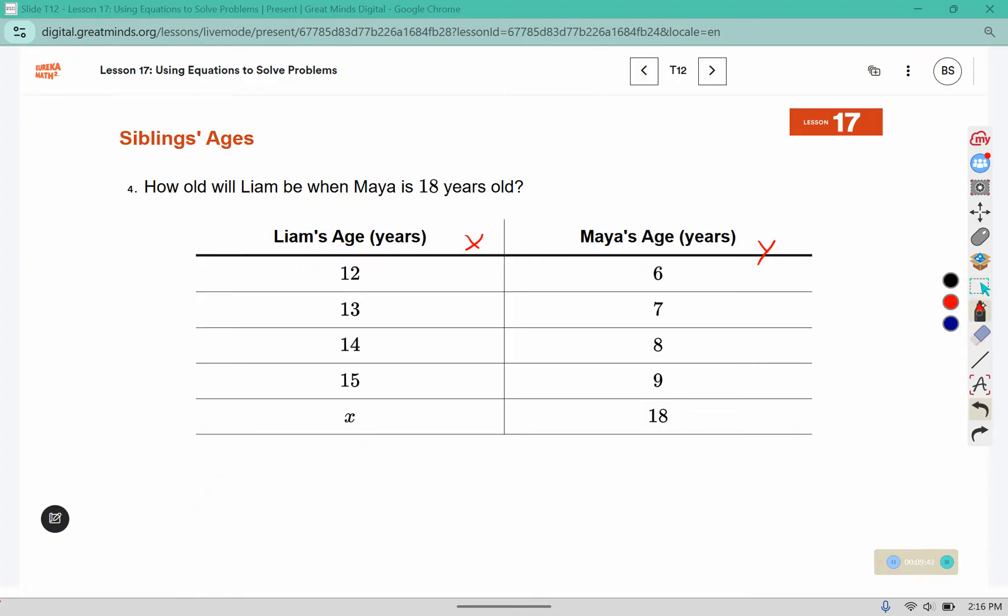So let's see. As these increase by 1, these increase by 1, and that increases by 1, that increases by 1. Let's look at how far apart Maya and Liam are in age. Well, to get from Liam's age to Maya's age, 12 minus 6 would give us 6. 13 minus 6 would give us 7. 14 minus 6 would give us 8 and 15 minus 6 would give us 9.